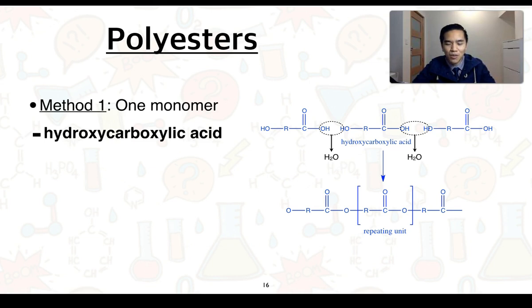I've also indicated what we call the repeating unit. So in this case, you can see that this section of the molecule can essentially be copied and pasted numerous times to form the remaining part of the molecule. Sometimes we put a subscript n over to the bottom right of the square brackets to indicate this repeats n number of times.